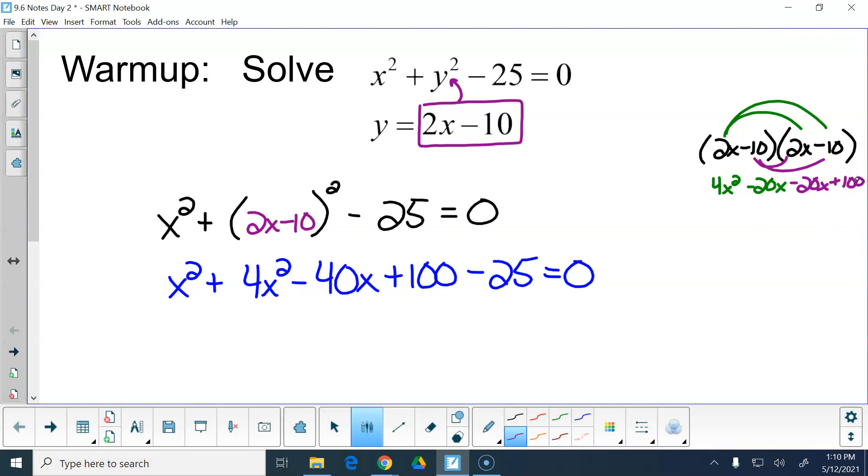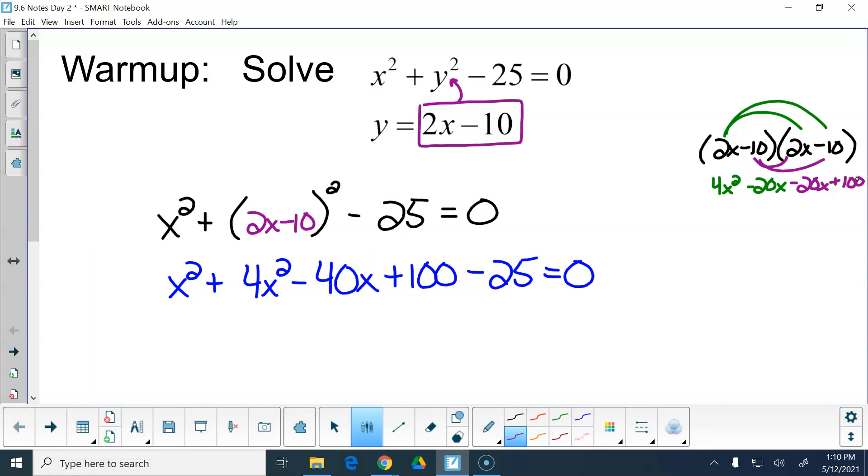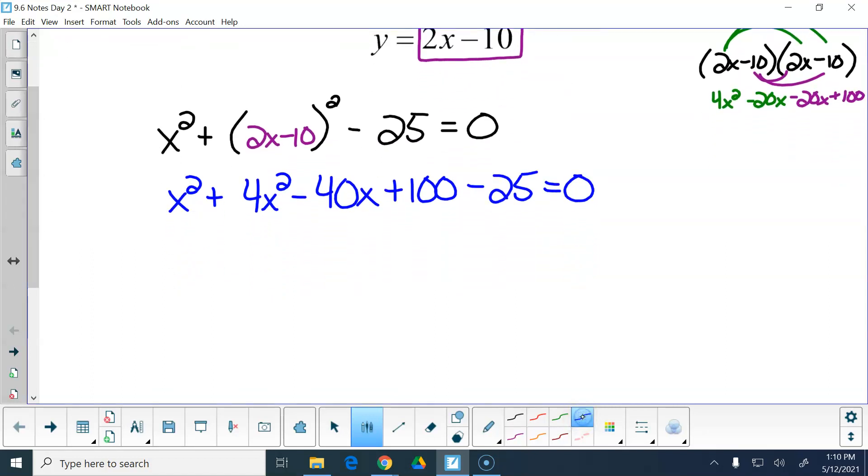So then we get x squared plus 4x squared minus 40x plus 100 minus 25 equals 0, which becomes 5x squared minus 40x plus 75 equals 0.